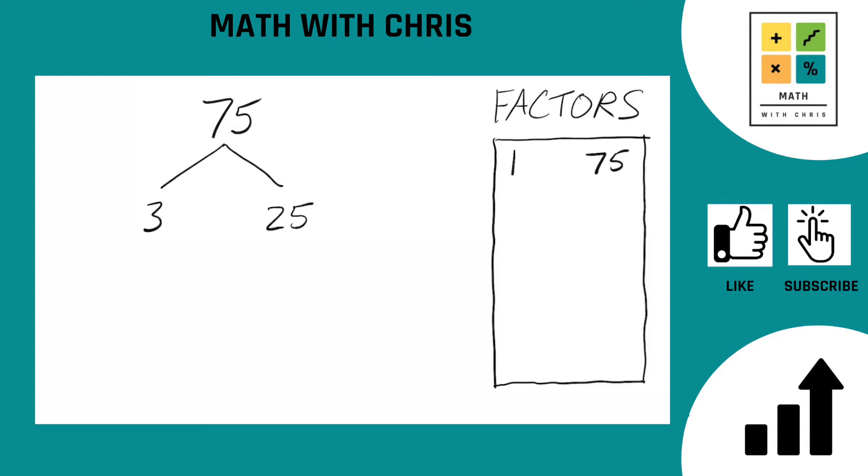Let's look at 3 first. 3 is a prime number. Circle that. That's already done. 25 can be broken down into 5 times 5. 5 is a prime number, so circle both of those. This factor tree is done already.